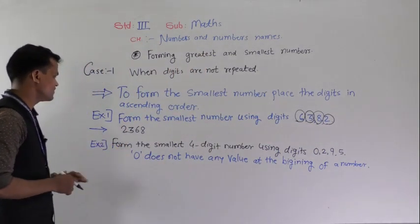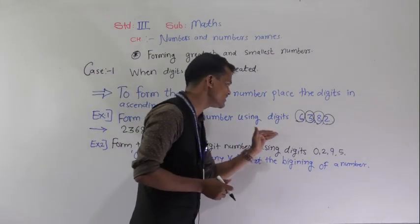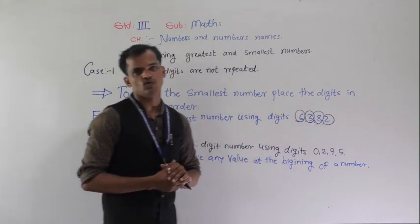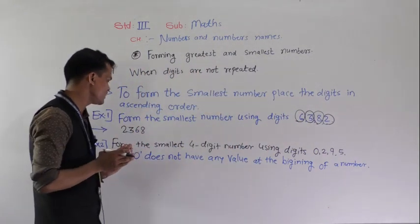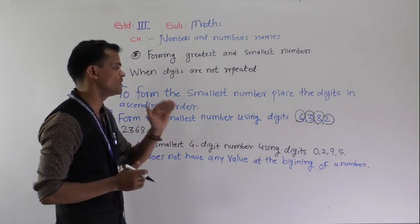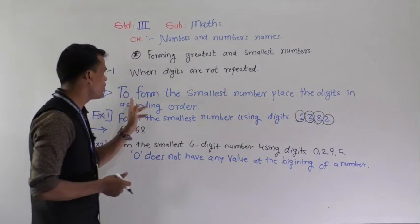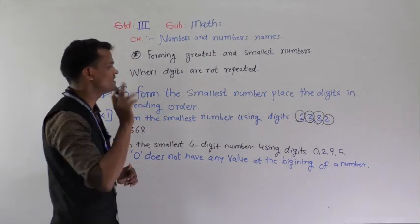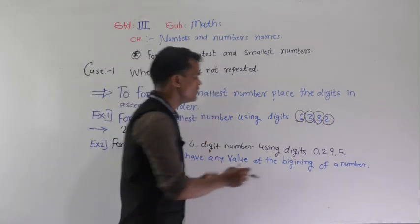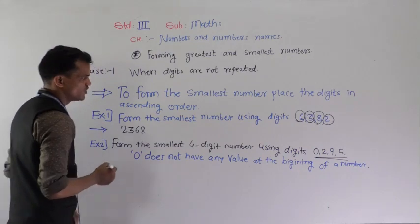Next example: form the smallest 4-digit number using the digits 0, 2, 9 and 5. But here there is one important thing — 0 does not have any value at the beginning of a number. We learn the rule to form the smallest number: place the digit into ascending order. But by using this rule, if we form the smallest number, I am showing you.